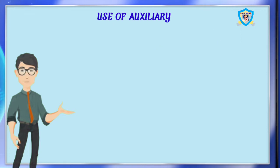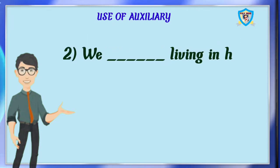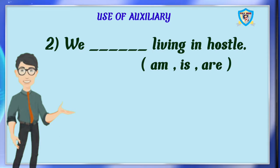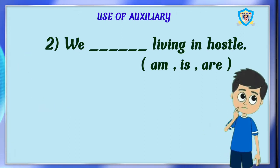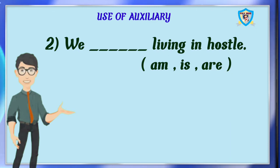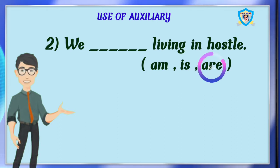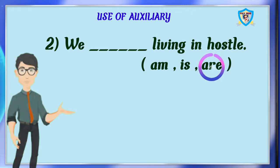The second question is: we dash living in hostel. Options are am, is, are. Can you say the right auxiliary? Is. No, it is wrong. Here the sentence is present continuous — we dash living in hostel. So we have to use: we are living in hostel. Here the subject we is in plural form, so we have to use are.